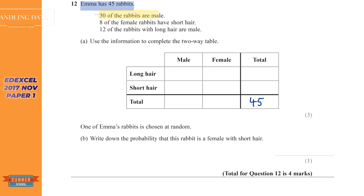The next one, 30 rabbits are male. So in total, 30 are male. So 30 are going to be male. The next part says, 8 of the female rabbits have short hair. So of the female rabbits, 8 have short hair. So this one here is female rabbits that have short hair. So there's 8 in there. The next part says, 12 of the rabbits with long hair are male. So long hair and 12 of them are male. So that's all that's given to us so far.